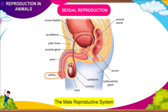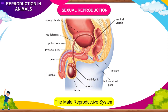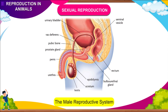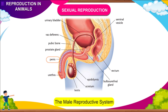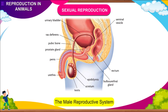Urethra: sperms mix with the fluid secreted by seminal vesicles and the prostate, which provide nourishment to them. This combined fluid is called semen. The urethra is the last connecting link from testes to the exterior. The urethra is supplied with mucus derived from the large bilateral bulbourethral gland located near the beginning of the urethra. Penis: the urethra opens into a muscular structure called the penis. The penis has a rich supply of blood vessels and erectile tissues which cause stiffness in the penis.